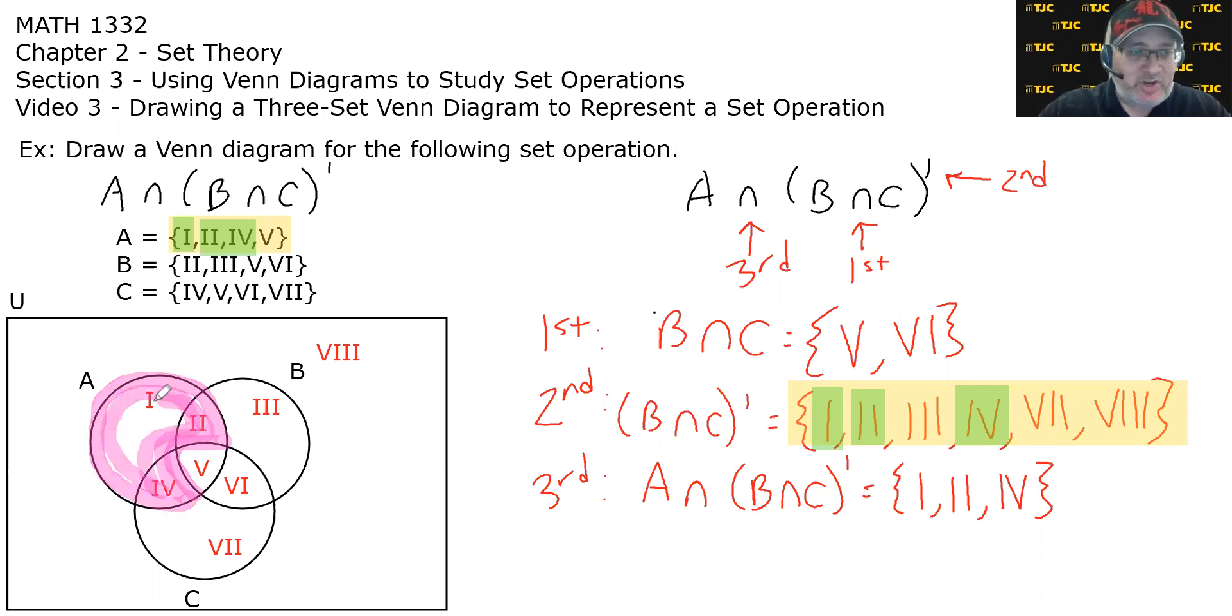Meaning that in our Venn diagram, we would shade regions one, two, and four. Which kind of looks like this. Almost looks like a Pac-Man shape. Now, some of you might be thinking, do I have to do all this to figure out what's shade in? My reply is, I don't know. Do you?